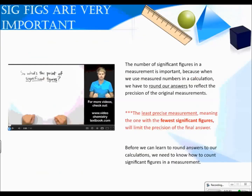The number of significant figures in a measurement is important. When we use measured numbers in a calculation, we have to round our answers to reflect the precision of the original measurement. The least precise measurement — meaning the one with the fewest significant figures — will limit the precision of our final answer. Before we can learn to round our answers in our calculations, we need to know how to count significant figures in a measurement. For more help on why significant figures are important, please see this video on our website.